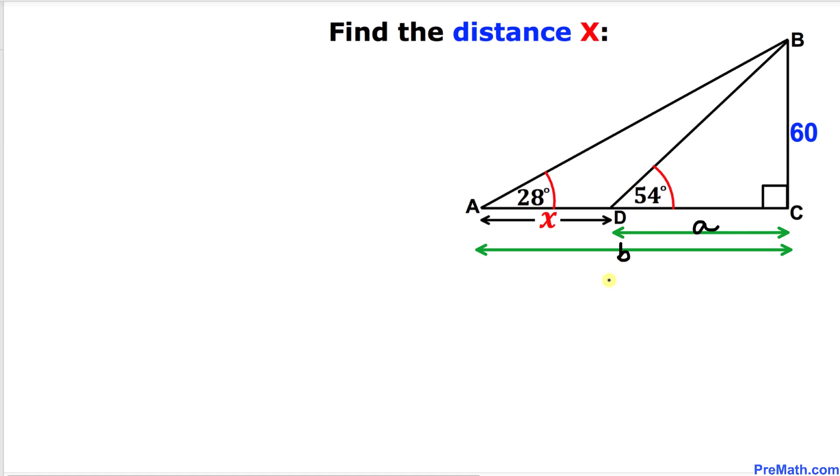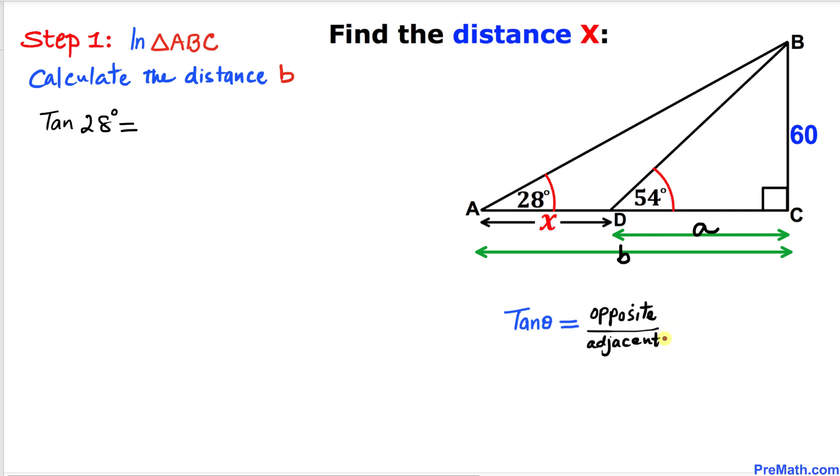Here's our first step. Let's focus on this big right triangle ABC. We are going to calculate this distance b, so we're going to use this trigonometric ratio: tangent of 28 degrees equals... We know that tangent theta is always equal to opposite over adjacent. In our case, this side BC is our opposite and this side length b is our adjacent.